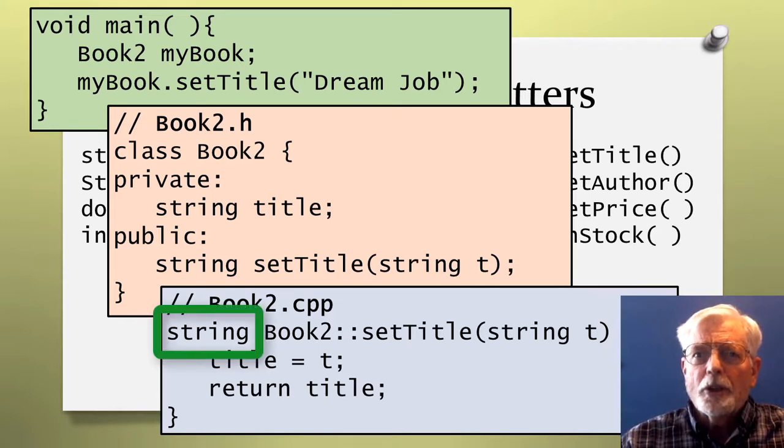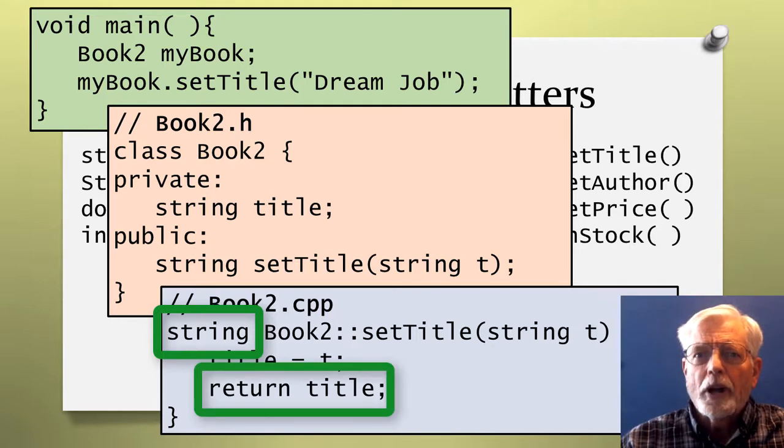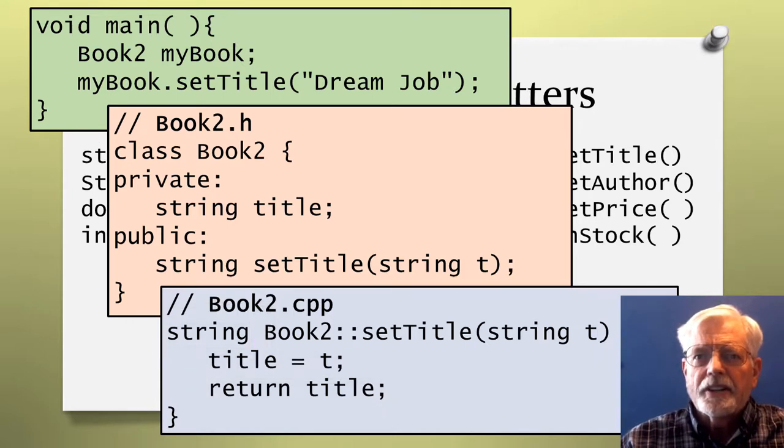Looking back at the definition for the method, it shows that the return data type is string. Therefore, we need to use a return statement in Book2.cpp to return a string. I am returning the same data that SetTitle received. In this case, it is dreamjob. I am only doing this so that the SetTitle method can possibly be used sometime later as part of a bigger expression.